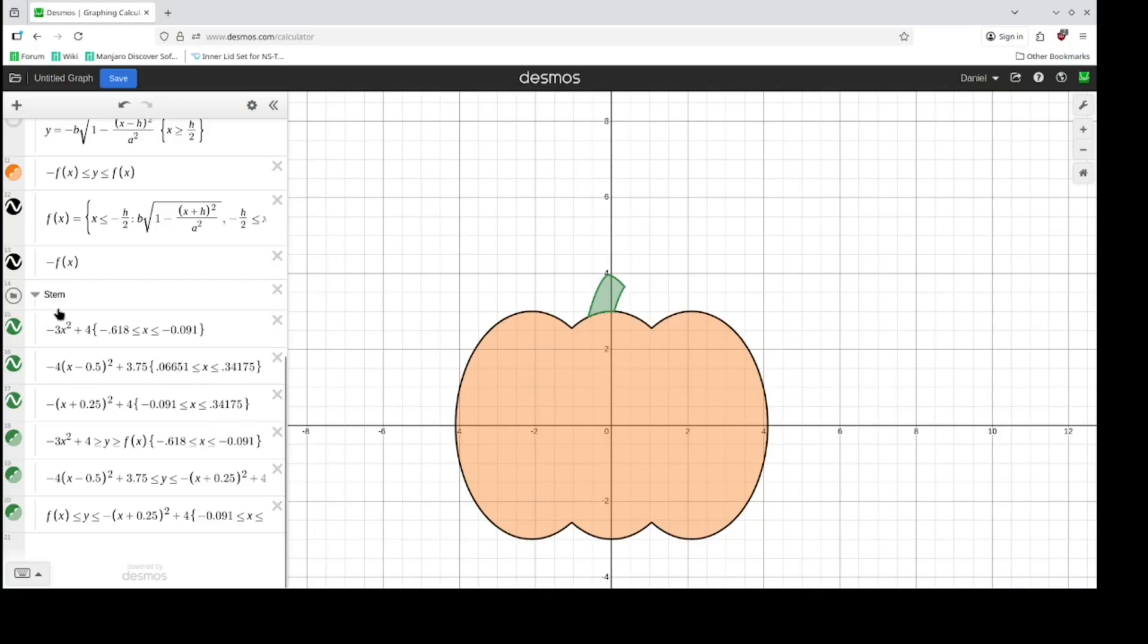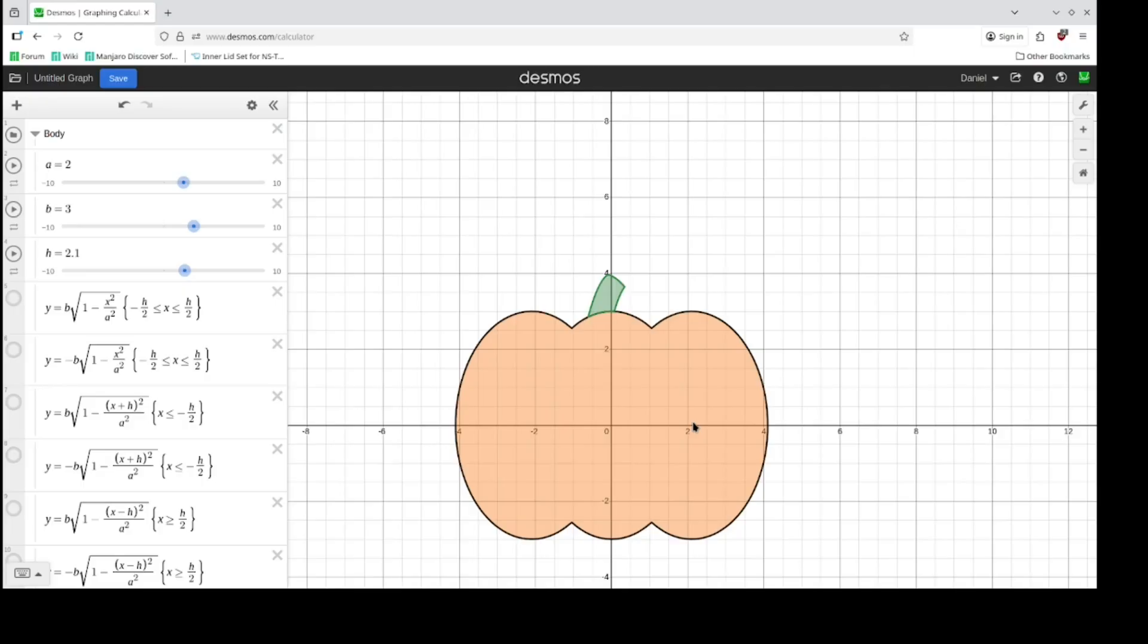Right, so while the stem is not adjustable, the body of the pumpkin is. How do you adjust it? Well, the a value controls how separated each of these outer ellipses are, so move them out or inwards. This b value is the vertical height or vertical stretch—they control like that. And this h value is how far away from the center, or the offset, that these ellipses are.